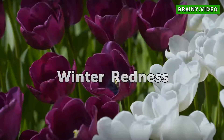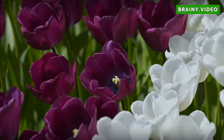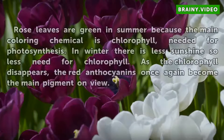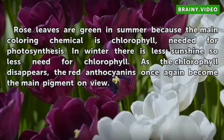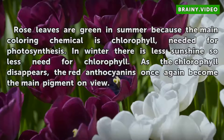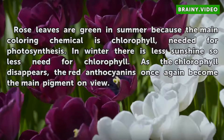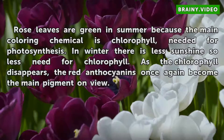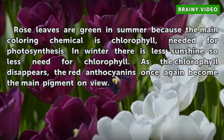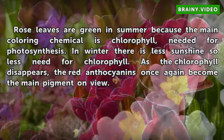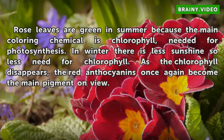Winter Redness. Rose leaves are green in summer because the main coloring chemical is chlorophyll, needed for photosynthesis. In winter there is less sunshine, so less need for chlorophyll. As the chlorophyll disappears, the red anthocyanins once again become the main pigment on view.